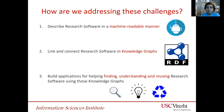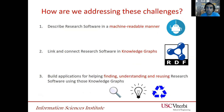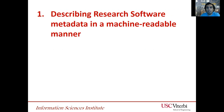In this talk I'm going to focus on three main things we have been doing in our group to address these challenges. First, we have worked on creating machine-readable descriptions of research software. Second, we have taken these machine-readable descriptions to create knowledge graphs that connect different pieces together. And finally, we have been building applications to help scientists find, understand, and reuse research software based on those knowledge graphs.